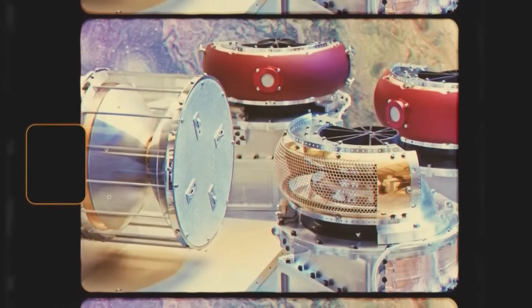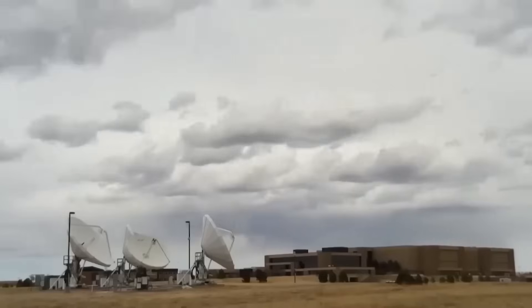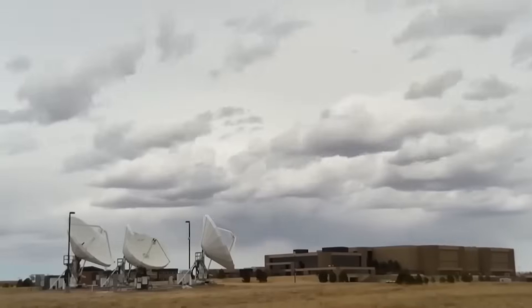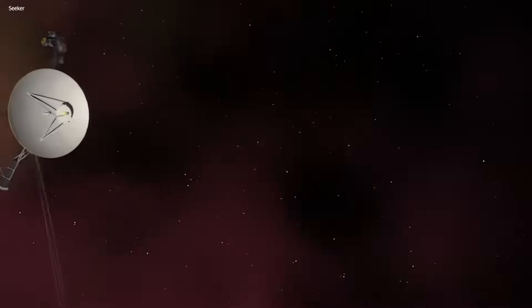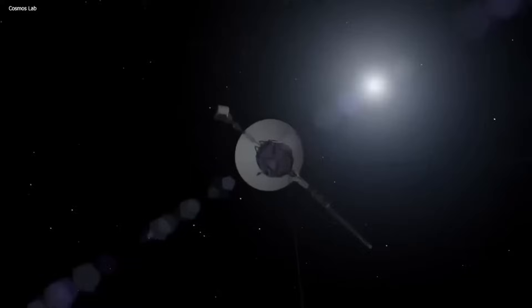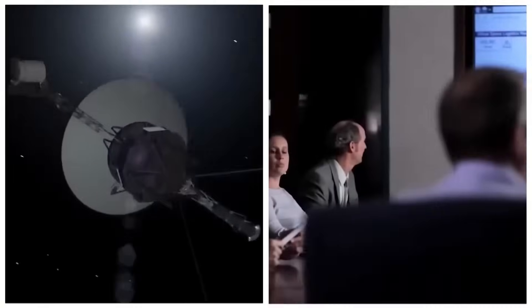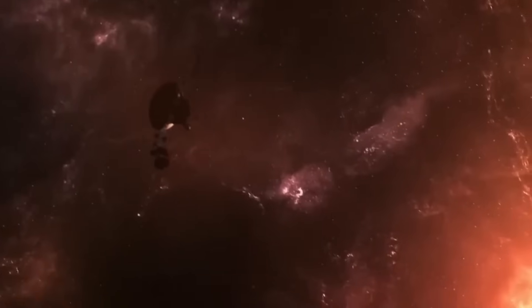While these dedicated scientific instruments diligently collect data, the Hi-Gain antenna serves as the communication lifeline, ensuring that their findings are efficiently transmitted back to Earth with a robust and unwavering signal. This antenna plays a pivotal role in facilitating continuous and effective communication between Voyager 1 and mission control, enabling us to receive the invaluable treasure trove of knowledge amassed by these instruments.